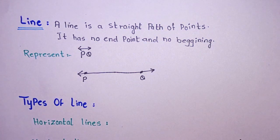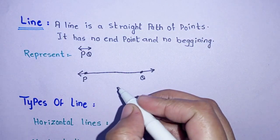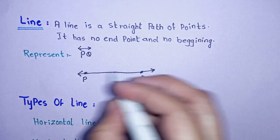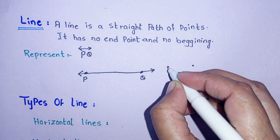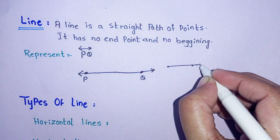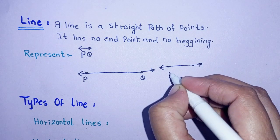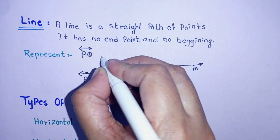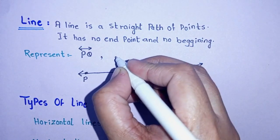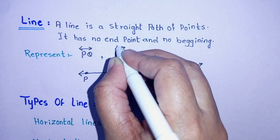I hope you have understood the concept of line and point. These alphabet labels can be anything we choose. Here I have two points that I connected, and I named them L and M. So I would represent this as line LM.